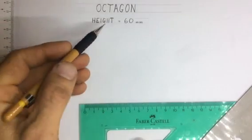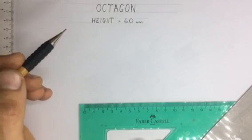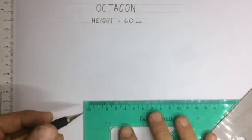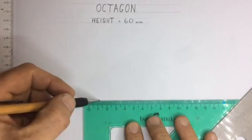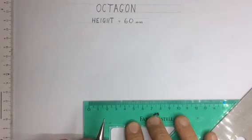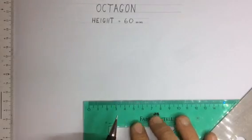Right, drawing an octagon with a height of 60 millimeters. So the first thing you're going to do is draw a construction line with a length of 60 millimeters, just drawn from there to there. So I've got my 60 millimeters.